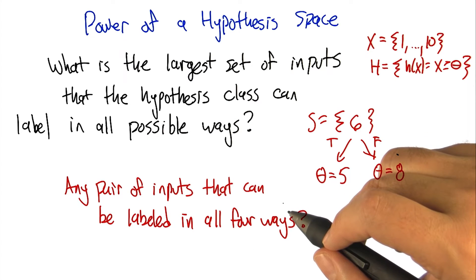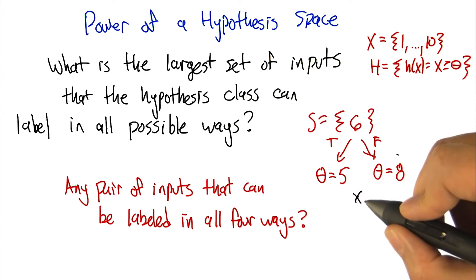But is there any pair of inputs that we can label in all four ways? I'm going to say no. And why is that?